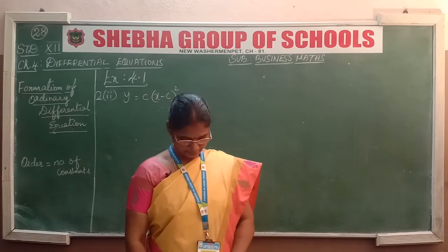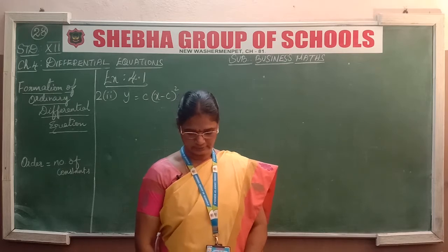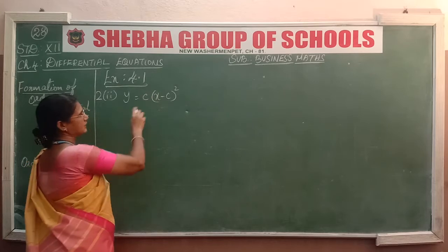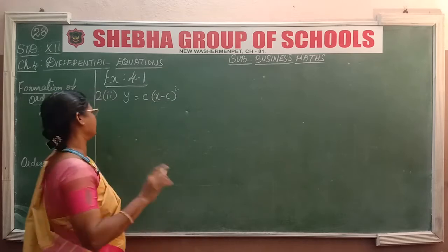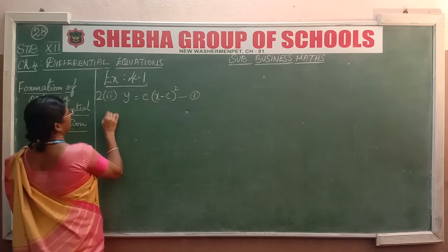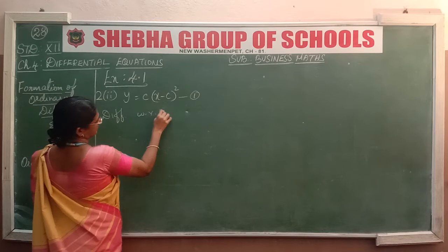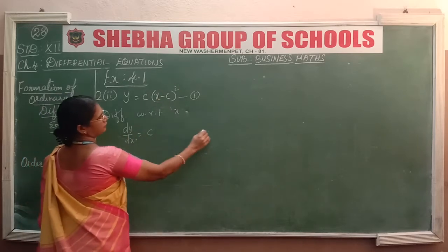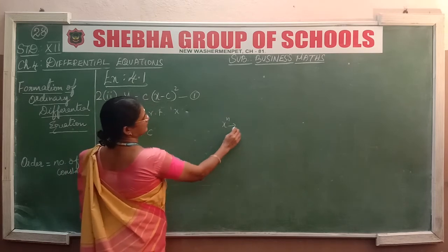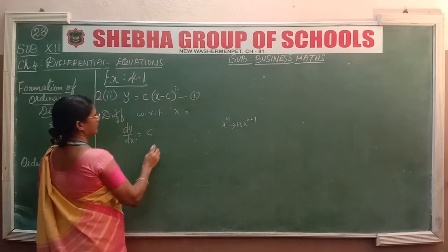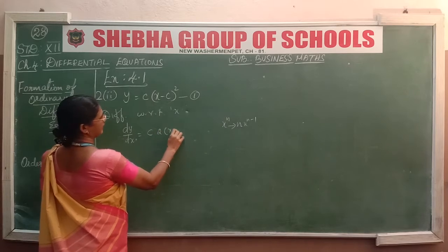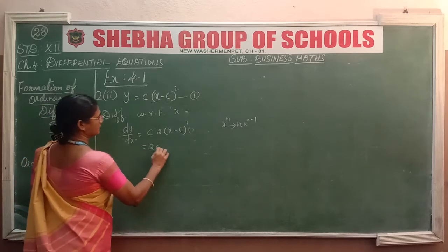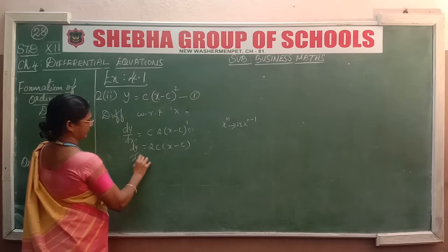Now let us see exercise sum, second sum, page number 134: find the differential equation of the following. Second subdivision: y = c(x − c)². There is only one constant, so we differentiate only one time. Mark the given equation as equation 1. Differentiating with respect to x, dy/dx = c × 2(x − c)^1 × 1, using the power rule. So dy/dx = 2c(x − c). Mark this as equation 2.